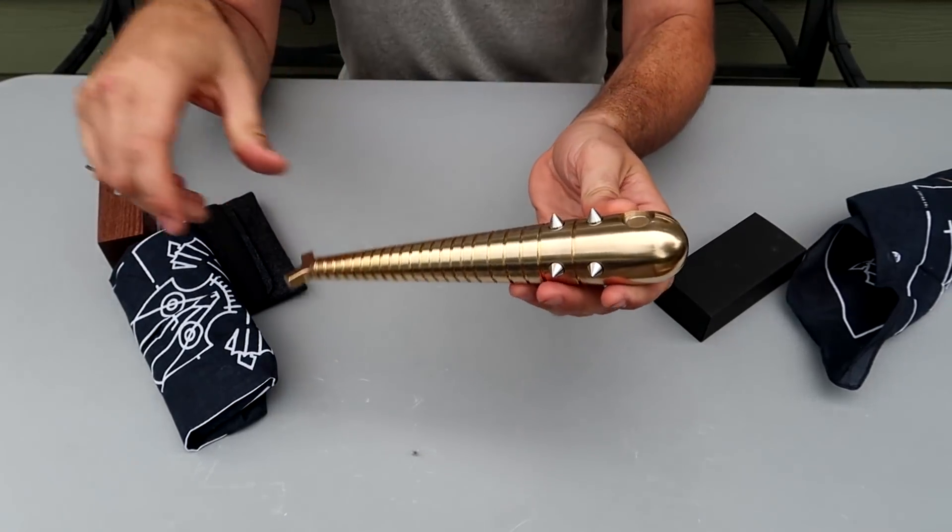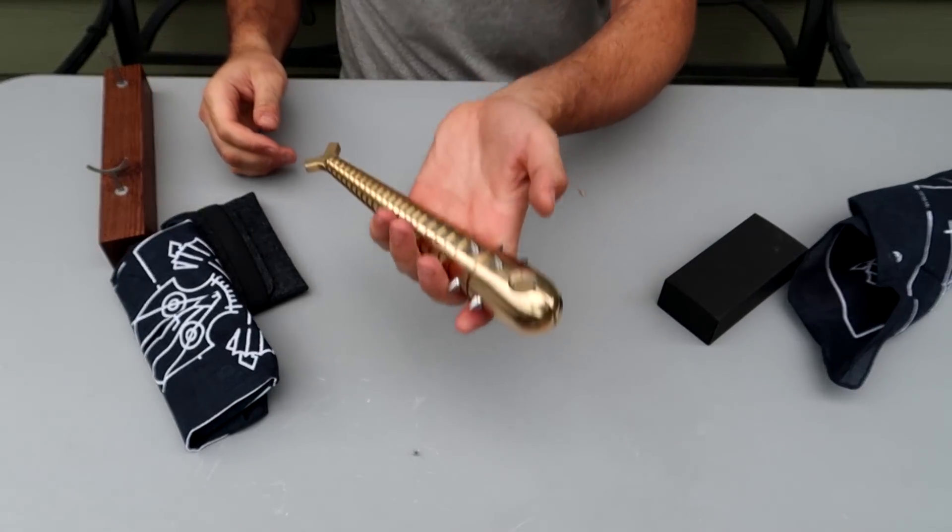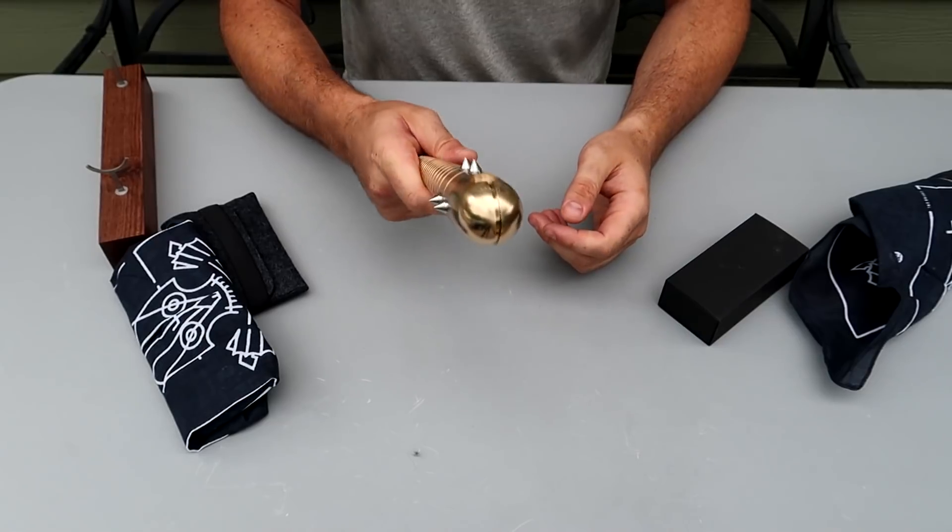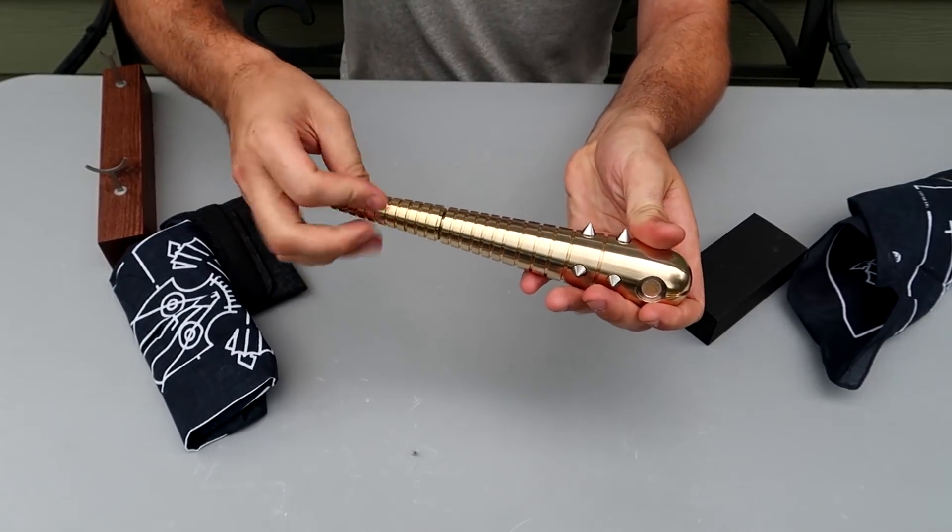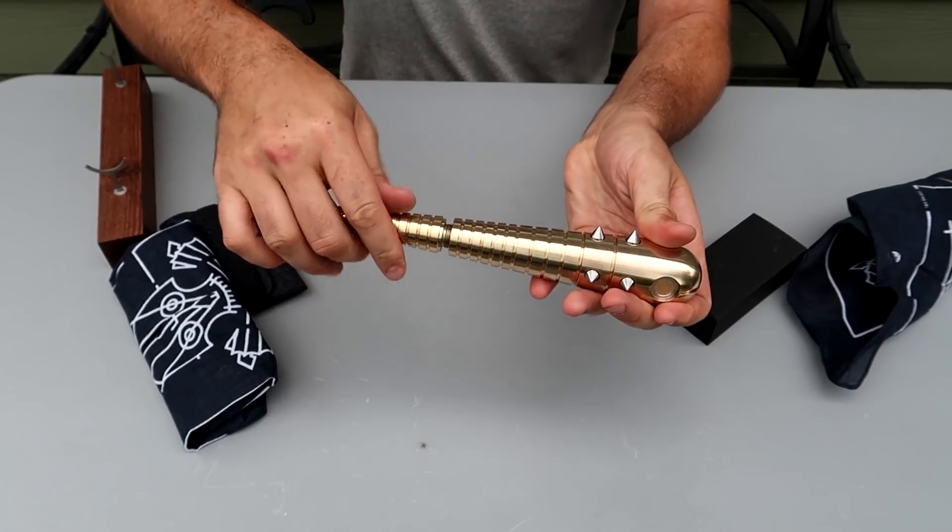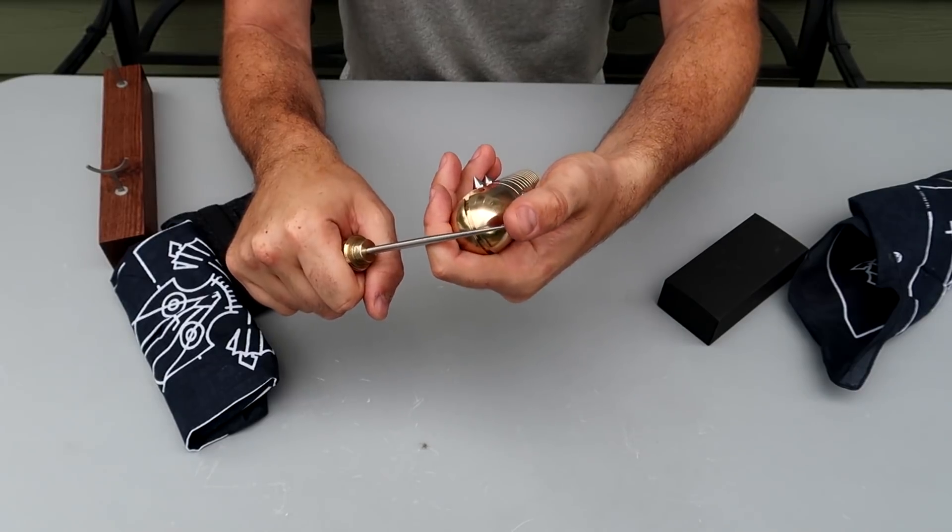So check this out. You got right here Bulava or club, whatever you want to call it. And it's really hefty, made from solid block of metal. But the coolest part about it, you can open it like that and you got right here a pick. How cool is that?